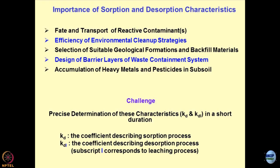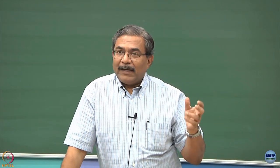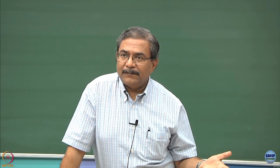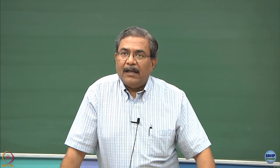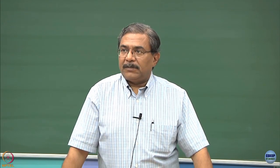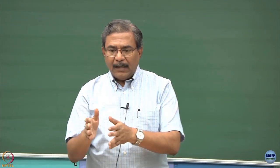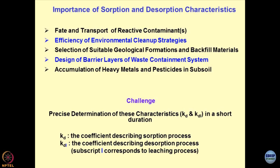The challenges are that precise determination of KD itself is a big question mark. We use this parameter to define the interaction between contaminant and geomaterials. KDL corresponds to the KD parameter associated with the leaching or desorption process, while KD is associated with the sorption process. It is quite difficult to measure KD and KDL precisely, but we should still try. As an engineer, I need numbers — without numbers I cannot design my systems or dispose of waste, particularly toxic waste like nuclear waste.